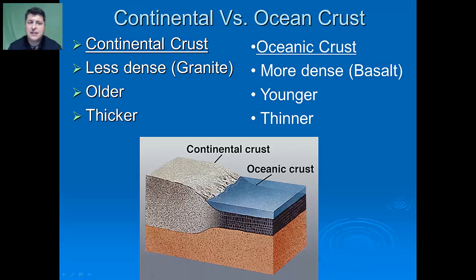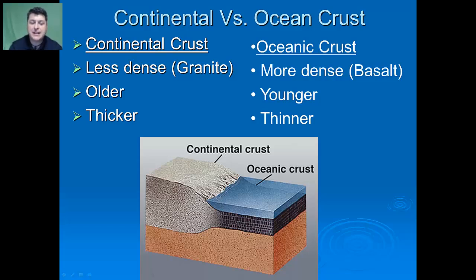Continental crust is much less dense than oceanic crust, made mostly of granite, whereas oceanic crust is made mostly of basalt. Continental crust is much older while oceanic crust is younger because it's constantly being formed at oceanic ridges. Continental crust is typically thicker while oceanic crust is much thinner in nature.